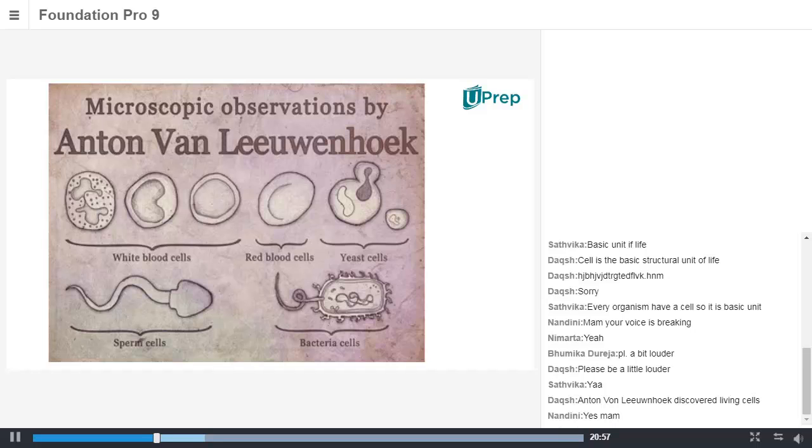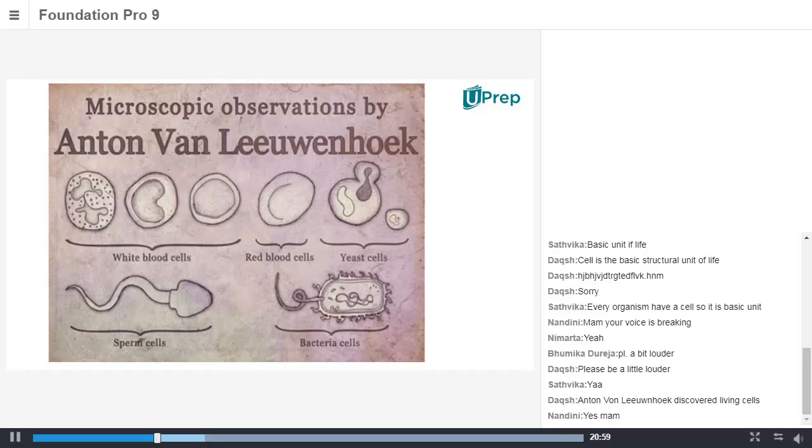Okay, so red blood cells you'll find in blood, they contain a pigment called... hemoglobin? Yes, hemoglobin. Right, right. Now red blood cells contain hemoglobin because of which our blood is red in color, isn't it? So like that...